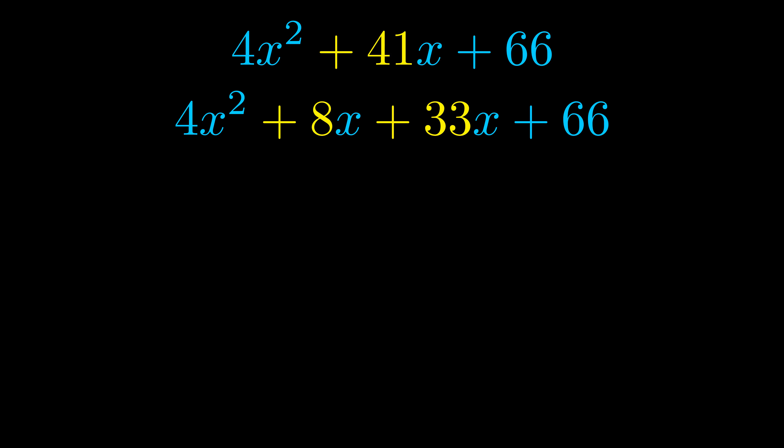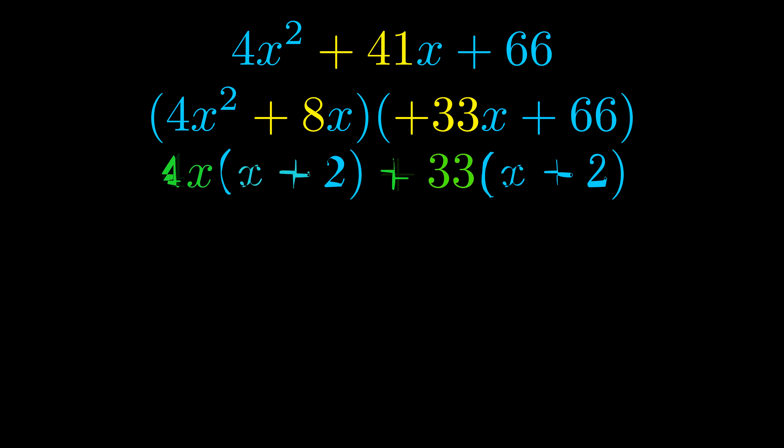Once we've done this we go ahead and we put parentheses around the first term and the last term and we do that so that we can take the greatest common factor out of both terms. We can see the greatest common factor is now outside in green.